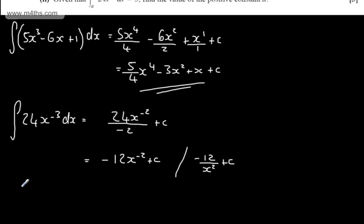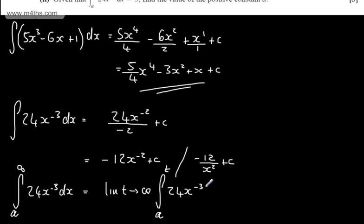What I'm going to do is just rewrite this. I'm going to write that the integral from A to infinity of 24x to the minus 3 dx, and I'm going to introduce at this stage t. So what I'm going to say now, as the limit of t tends to infinity, we will have now the integral from A to t of 24x to the minus 3 dx.